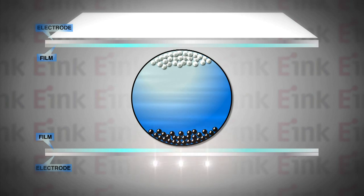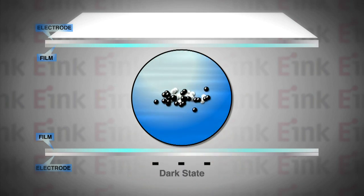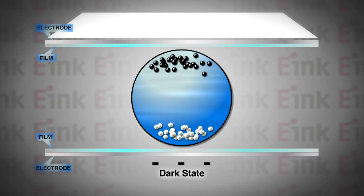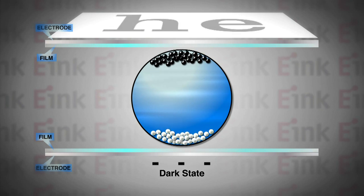When a negative electrical field is applied to the bottom of the film, the negative black particles are repelled to the top of the capsule. This changes the area on the top surface to black.